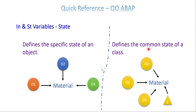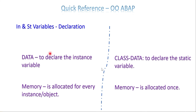At the declaration level: 'DATA' is the keyword to declare an instance attribute, and 'CLASS-DATA' is the keyword used to declare a static variable. From a memory perspective, memory is allocated for every instance or every object for instance attributes — that is the reason once you assign a value by one object, a different object won't get the same value. But for static attributes, memory is allocated once, and whoever accesses the static attribute gets values from that same memory, so you will always get the same value regardless of which object — or even the class itself — accesses it.